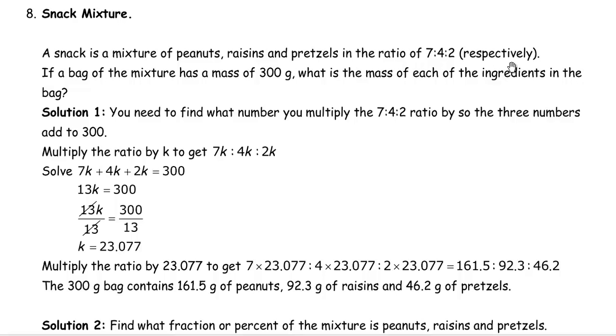The word respectively is here because that means the order the three peanuts, raisins, and pretzels were listed matches up with the order of the ratio. So peanuts was listed first, so that's the 7. Raisins was second, so that's the 4. And pretzels was last, so that's the 2.